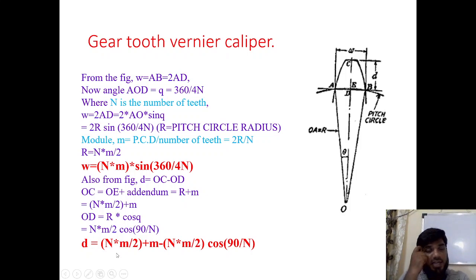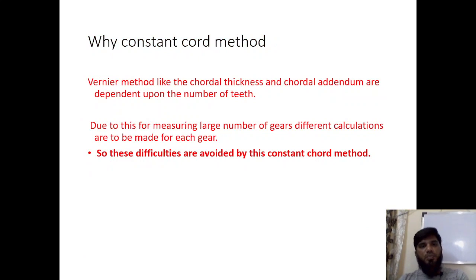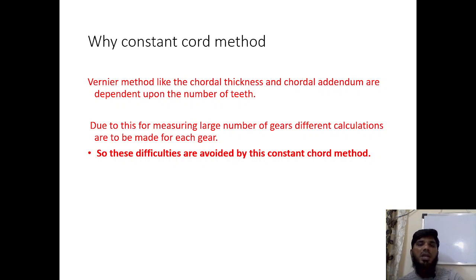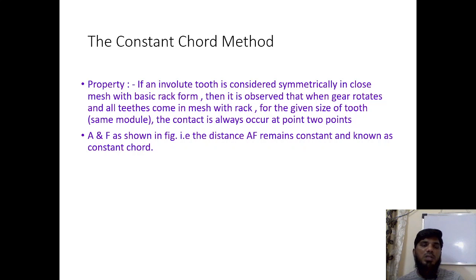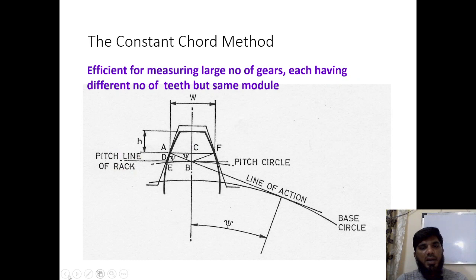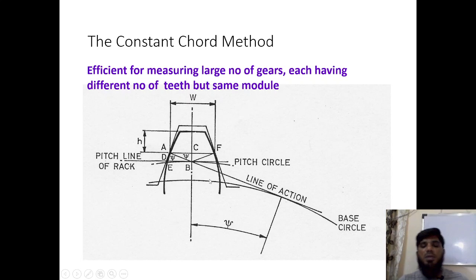The constant chord technique is used because in the vernier method, the constant chord and addendum values depend on the number of teeth, making measurement of a large number of gears a difficult calculation. These difficulties are avoided using the constant chord technique. The property used is that if an involute tooth is symmetrically enclosed with the mating rack form, a chord can be drawn. This method allows efficient measurement of a large number of gears each having different numbers of teeth but the same module, all measured using the same principle.